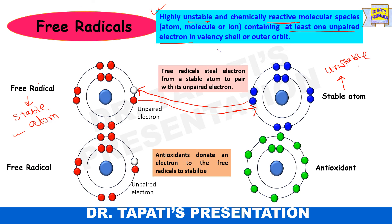Antioxidants donate an electron to the free radicals to stabilize that free radical. All the free radicals are not reactive oxygens, whereas all the reactive oxygens are not free radicals. Only a few free radicals come under reactive oxygen.